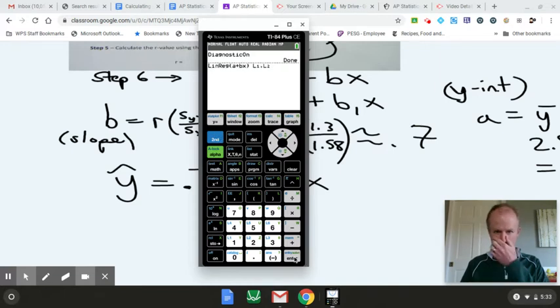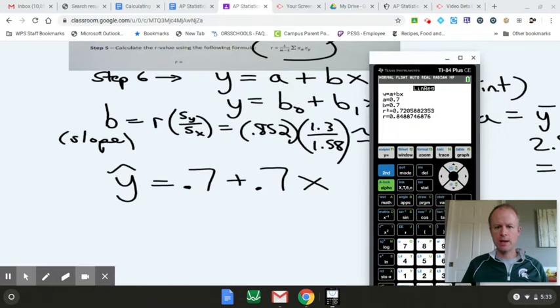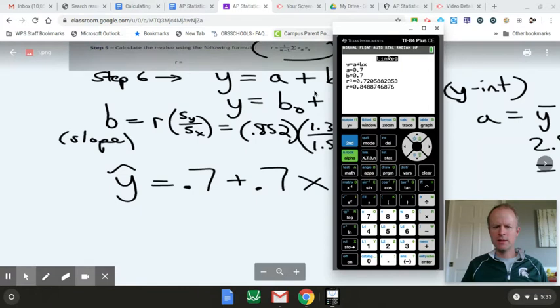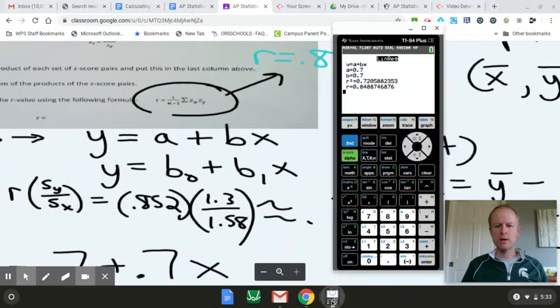And then once you do diagnostic on, then you go back and do that exact same entry that we did a minute ago. We get the r value, so you'd see 0.8488. And I believe when we did it a minute ago we got 0.852. It's probably just a rounding thing there, but it's very close. R squared is also given. We're going to talk later about what r squared represents. If you actually square r you get r squared, but it has a meaning in terms of the linear regression.